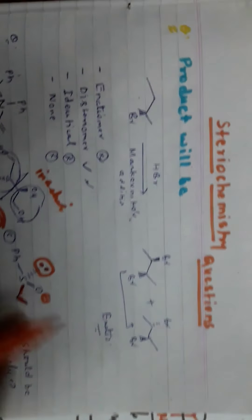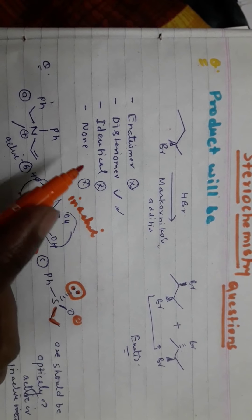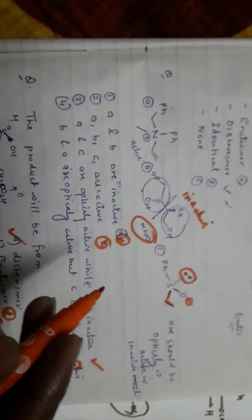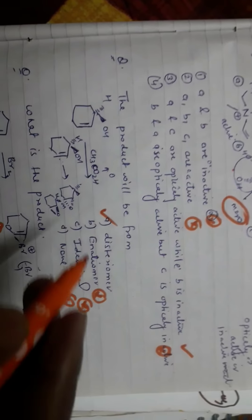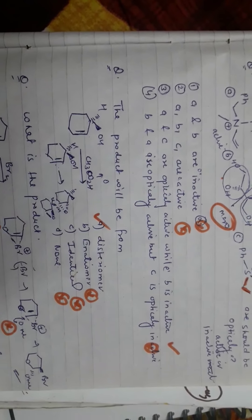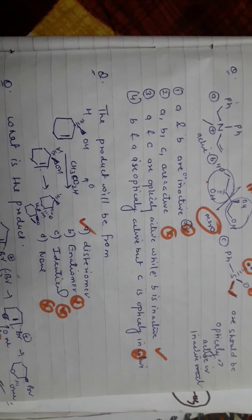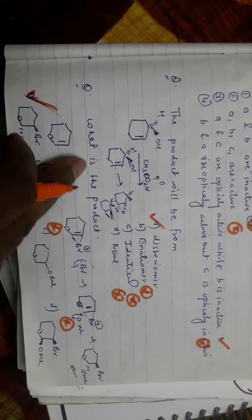So here we solved four problems. The first was related to diastereomers and enantiomers. The second was whether a compound is optically active or not. The third was identifying whether the product is a diastereomer, enantiomer, or identical. The fourth directly asked what the product is.